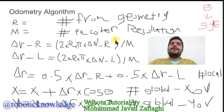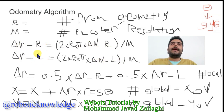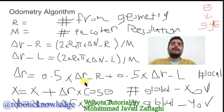Finally, we can summarize our odometry algorithm. Based on the change of the encoder feedback for the right and for the left wheel, you can calculate the change of the right and left wheel positions at the local frame. Finally, you can calculate the change of the interesting point — the point of the robot we want to track — based on the right and left wheel position changes.